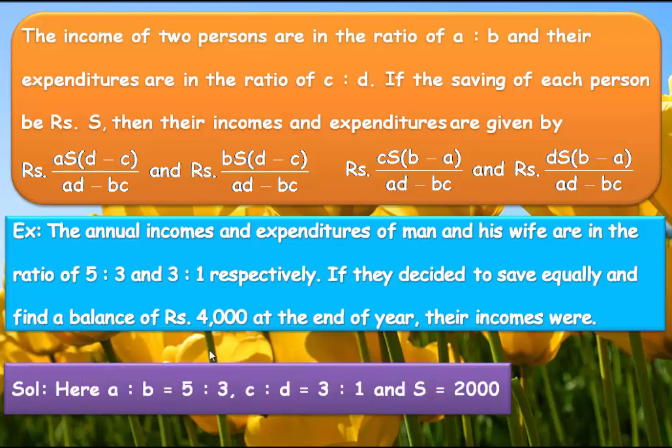Now comparing with the model: a:b = 5:3, c:d = 3:1, and S = 2,000 (because 4,000 is the saving of both the man and his wife). In the model, if each person saves Rs. S, then we can find the incomes and expenditures by using these relations.